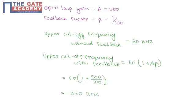The open loop gain A equals 500, the feedback factor β equals 1/100. The upper cutoff frequency without feedback equals 60 kHz, and upper cutoff frequency with feedback equals 60 times 1 plus Aβ.